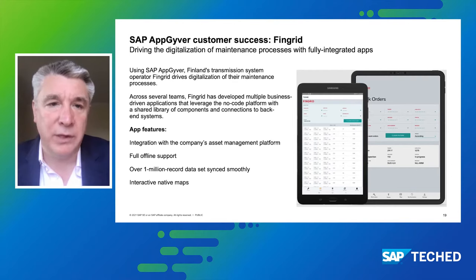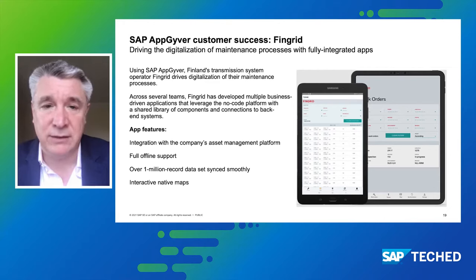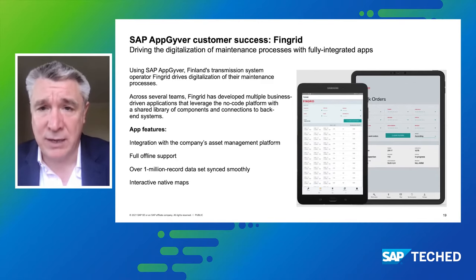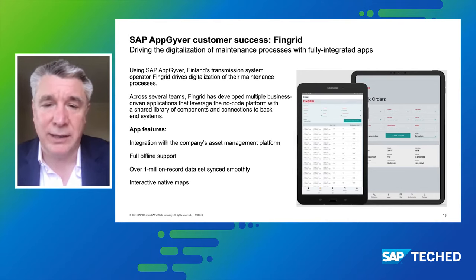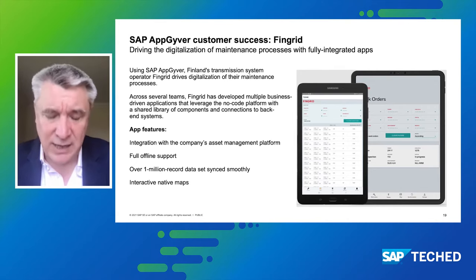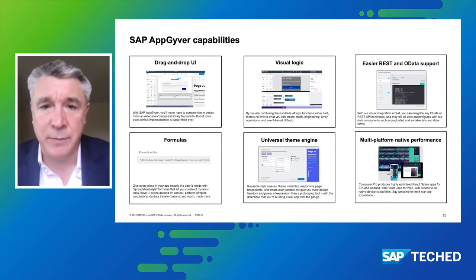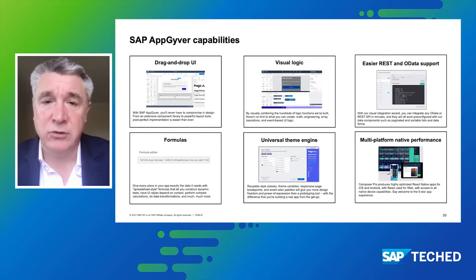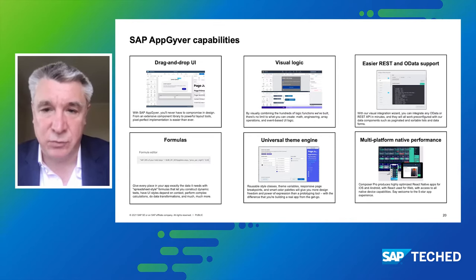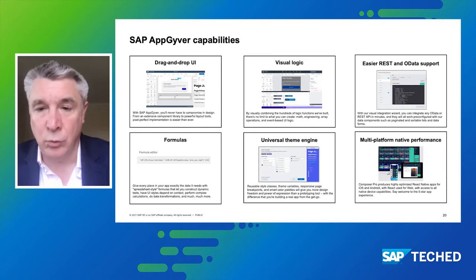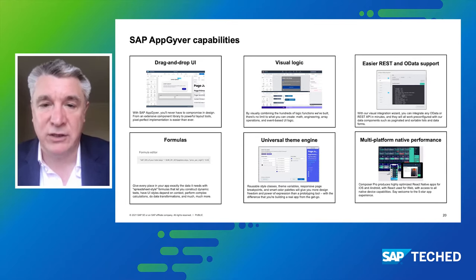Looking at some customer successes: Fingrid has been leveraging this capability to build and deploy apps across their entire organization — all built using a true no-code platform without writing a single line of code. To do that you need a full end-to-end capability: a drag-and-drop UI, visual logic rather than code, security and governance taken care of, and the ability to deploy across multiple platforms — mobile or web. So you can build these no-code apps and then actually deploy them.